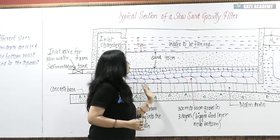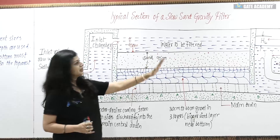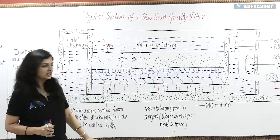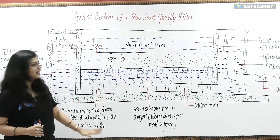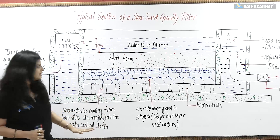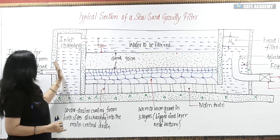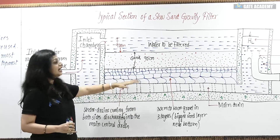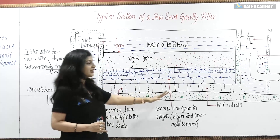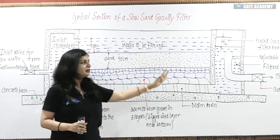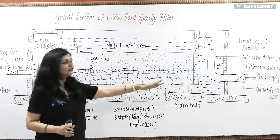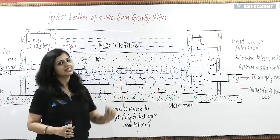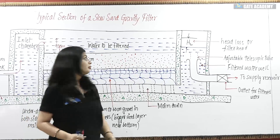This is our typical section of the slow sand gravity filter. It is simple: water comes from the inlet chamber, passes through the subsequent stages of filtration, goes through the main drain, then to the filtered water well, and finally to the reservoir. Here you get a head loss.